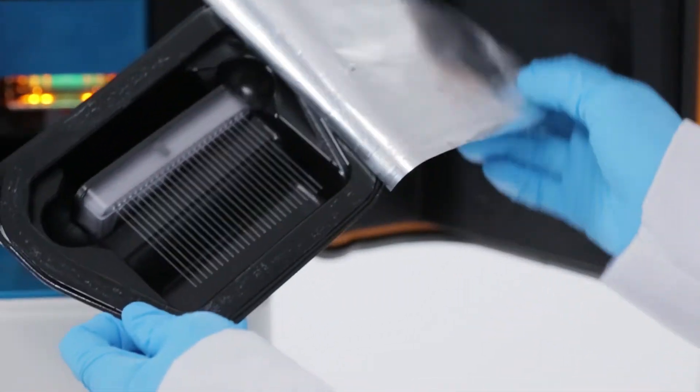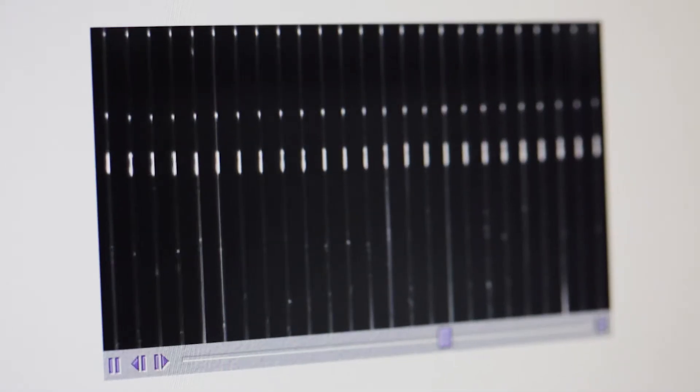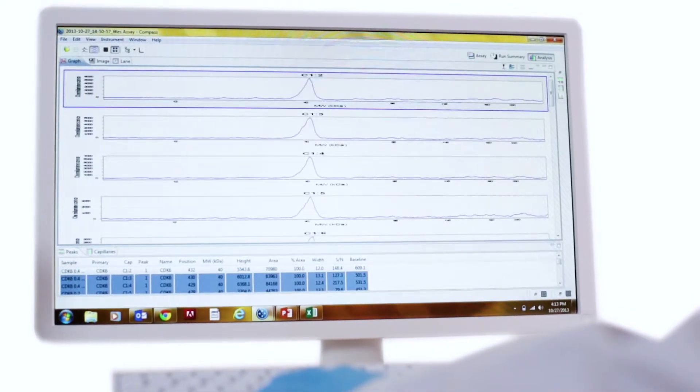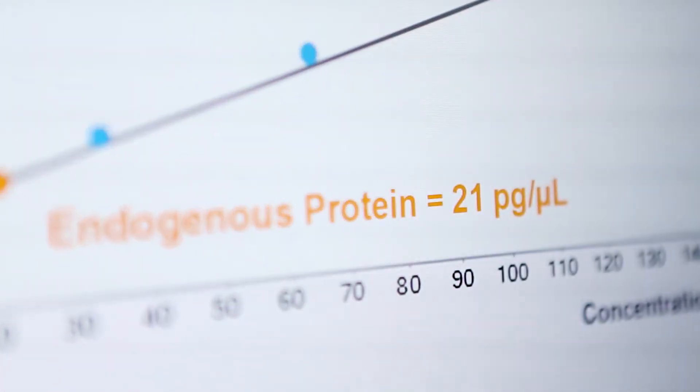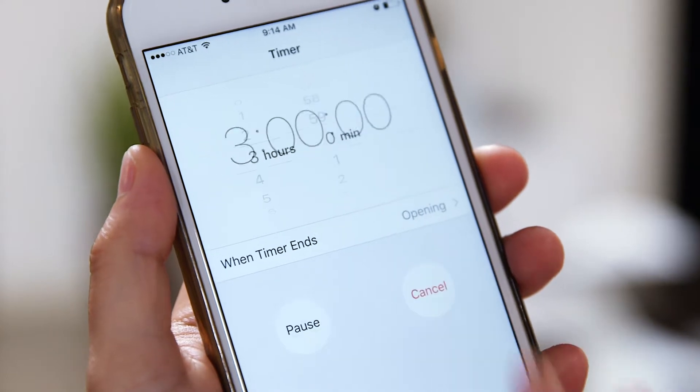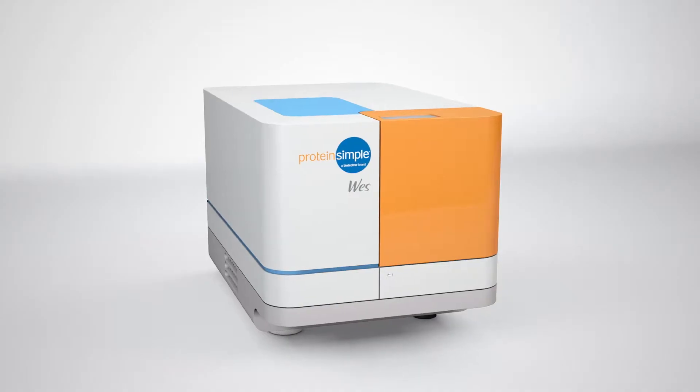Simple Western reinvents how Westerns are done, automating all steps from protein separation, immunoprobing, detection and analysis of data. It finally offers researchers an analytical tool that delivers quantifiable and reproducible results in hours versus days.